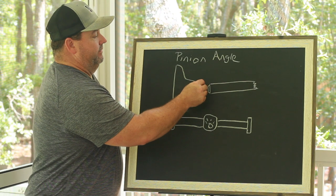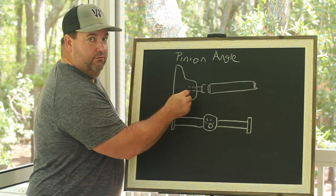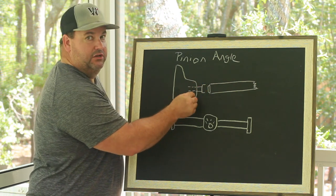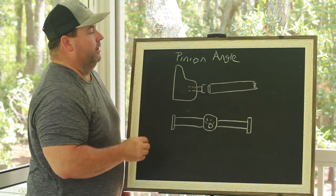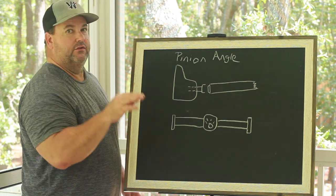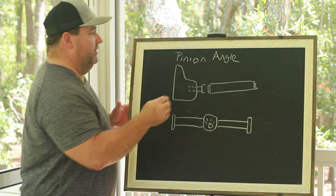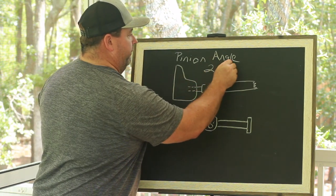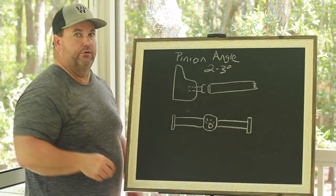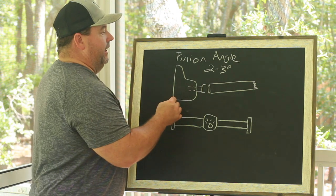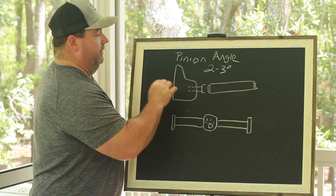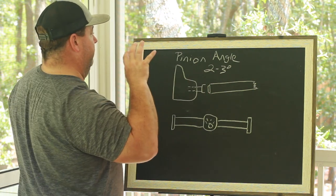Now the pinion angle is the angle of the drive shaft in relation to the pinion shaft. We'll get it out right now. We generally shoot for two to three degrees of pinion angle. Two to three degrees. And what I'm shooting for, we can argue on negative or positive pinion all day long, but I'm calling it negative pinion angle.